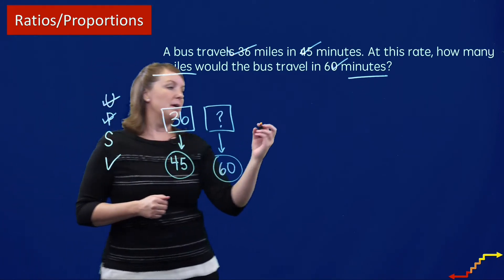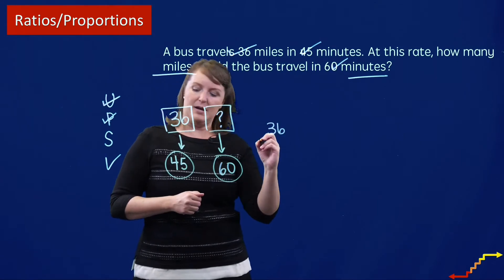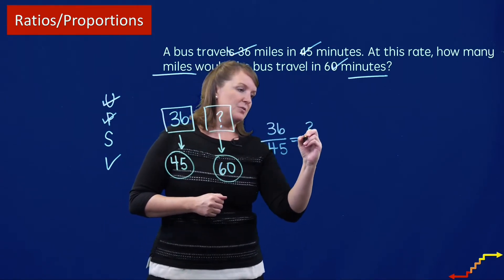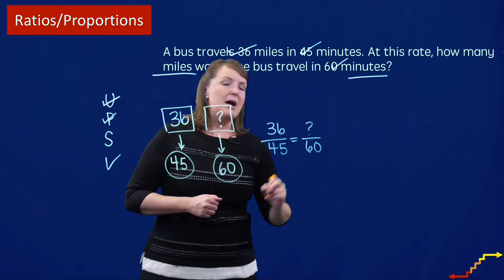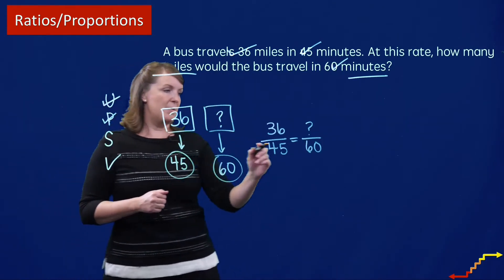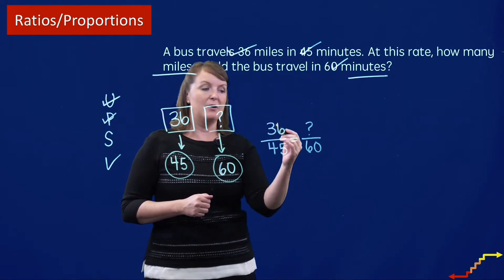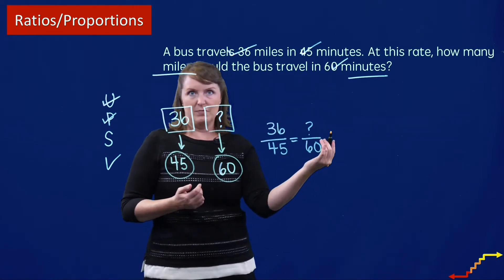So 36 is to 45 as question mark is to 60. Now, I've got to solve this problem. Sometimes it's helpful writing this in abstract form. So 36 is to 45 as question mark is to 60. Now I could look at the relationships among these numbers. I could see that 45 is 3/4 of 60 and use that to figure out that 36 is 3/4 of what number.